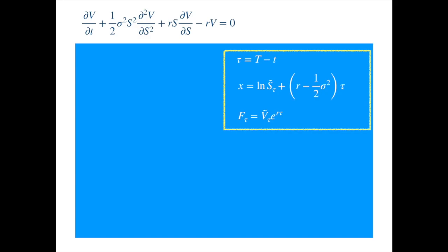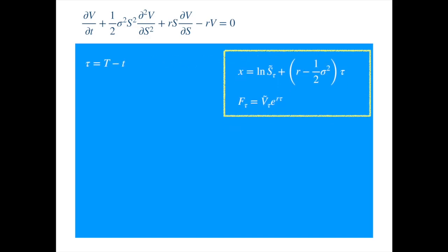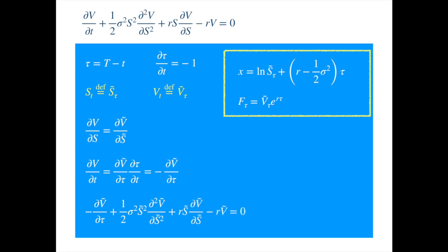We start with the time reversal. As we said a couple of minutes ago, we will represent the transform stock price and the transformed option price with tilde. Derivatives with respect to s doesn't change. For the derivative with respect to t, we need to transform it into a derivative with respect to tau. So we applied a chain rule. We can easily calculate the derivative of tau with respect to t. Now we can make the substitutions into the PDE. And we are done with the first transformation, which is, we transformed backward PDE to a forward PDE.